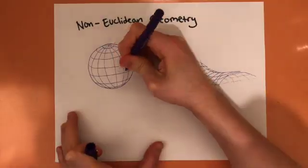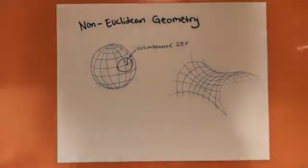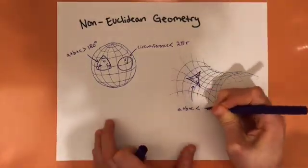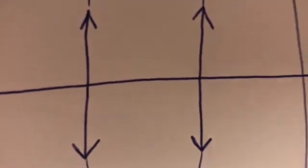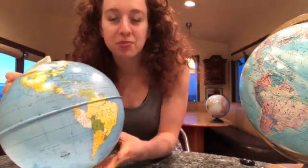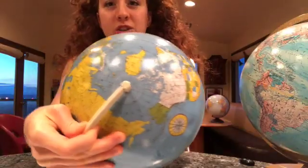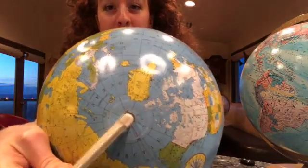Lots of weird properties start to arise when we're dealing with non-Euclidean geometries. The circumference of a circle will no longer be pi times the radius. The sum of a triangle's angles won't add up to 180 degrees, and two lines which may appear parallel when zoomed in will actually eventually intersect. The lines of longitude, which appear parallel at a zoomed-in part of the map, all intersect eventually at the North Pole and at the South Pole.